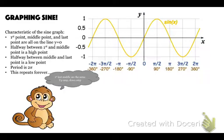Halfway between the first and the middle point is a high point, and then halfway between the middle and last point is a low point. The period is two pi, and this just repeats forever. First, last, and middle are the same — you go up the amplitude and you go down the amplitude. That is something to remember and write down.